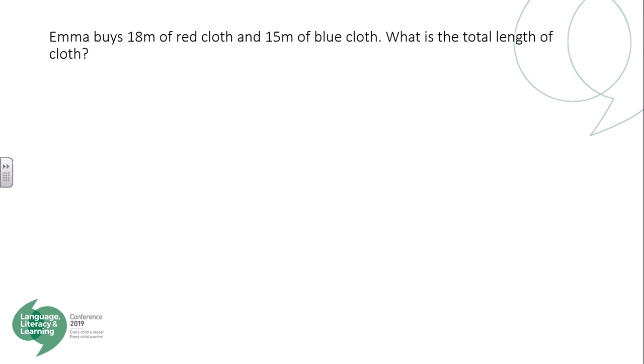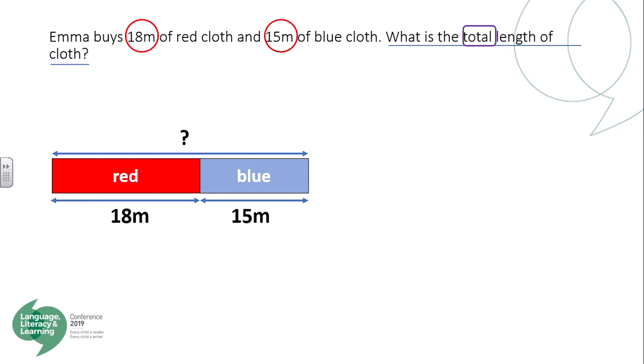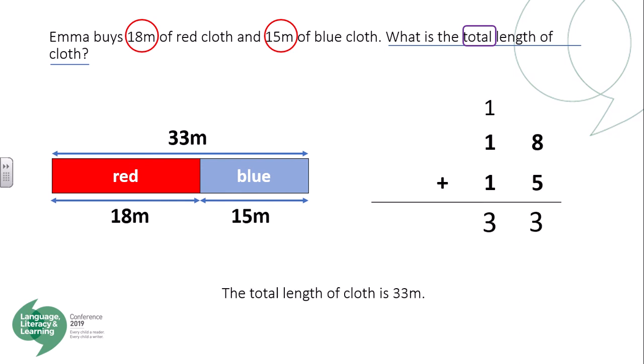Looking at this word question: Emma buys 18 metres of red cloth and 15 metres of blue cloth. What is the total length of cloth? Using the CUBE strategy — circle key numbers, underline the question, box the key maths action words — we can see we have two parts and we're trying to find the total. We have an unknown total, with the red part worth 18 metres and blue 15 metres. Two known parts, unknown whole — we use addition. The total length of cloth is 33 metres.